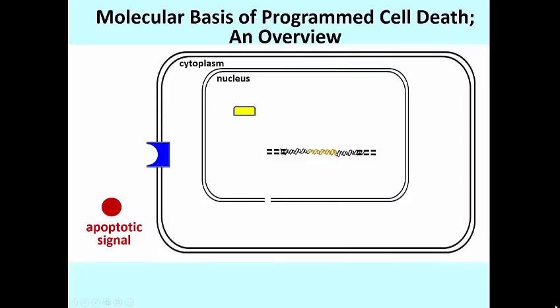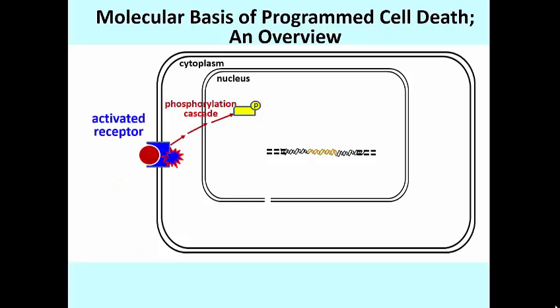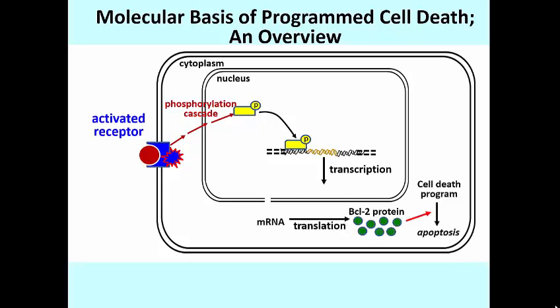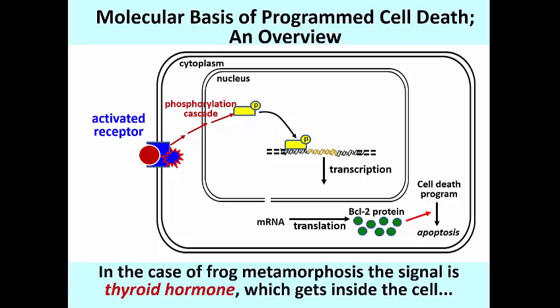Like many other regulated cell activities, apoptosis starts with an external signal. This diagram is shorthand for a signal transduction pathway that generates a transcription factor. The transcription factor, shown here in yellow, activates BCL-2 genes that lead to the synthesis of BCL-2 proteins. For the frog, metamorphosis results from the activation of genes initially stimulated by thyroid hormone, which actually gets inside the cell to deliver its message. Now let's look at how some BCL proteins work.